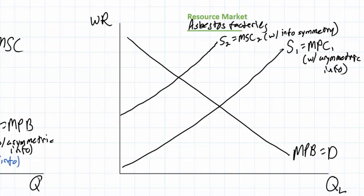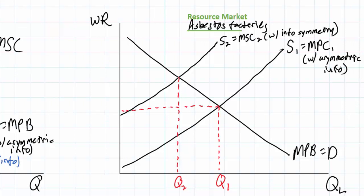How does this impact the quantity of employment in these factories? Since firms always make hiring and output decisions based on their private costs and private benefits, the equilibrium quantity under asymmetric information — call this Q1 — is greater than how many workers would have been employed if the workers had known all the facts about employment in these factories, which we call Q2. Additionally, the factory owner has to pay workers a much lower wage because the workers are not aware of how harmful the conditions are.